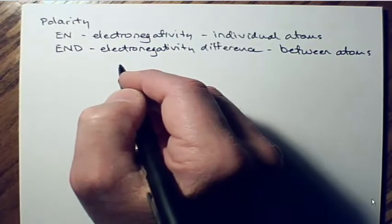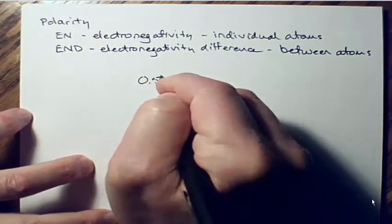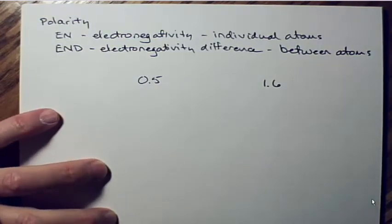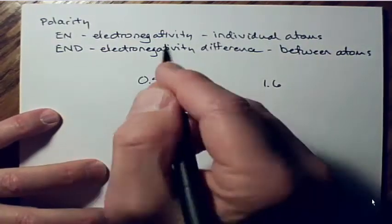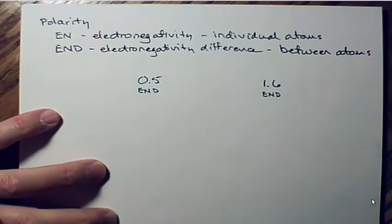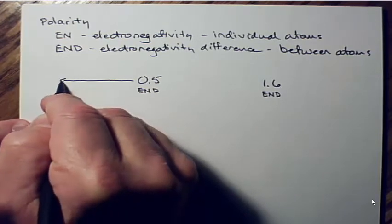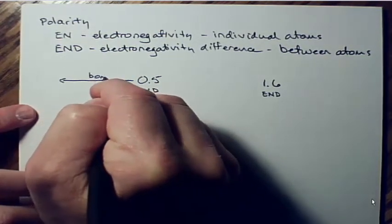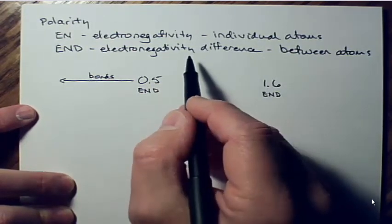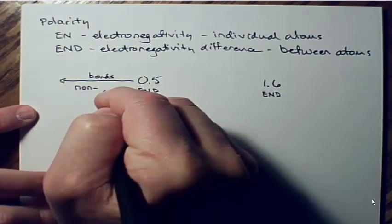The numbers given in the Crash Course video on polarity used electronegativity differences of 0.5 and 1.6. You subtract one electronegativity from the other — put the larger one on top — and you always get a positive number. If the electronegativity difference is less than 0.5, then the bonds are considered nonpolar.